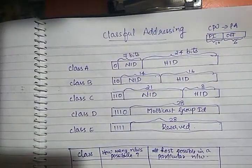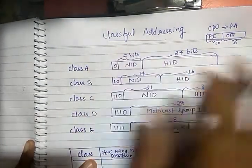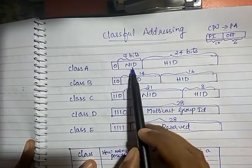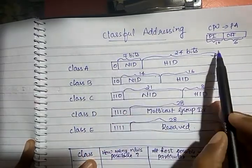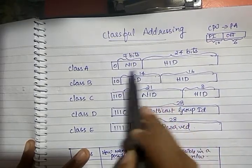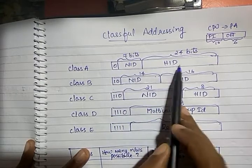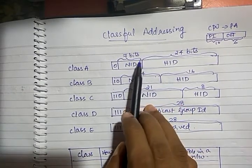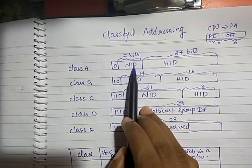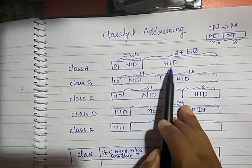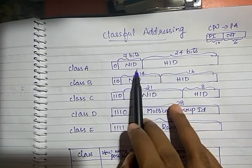The next concept is how the addresses are managed. It is a kind of hierarchical address. That means if you have a 32-bit address, that 32-bit address is divided into two parts — a Network ID (NID) and a Host ID. The Network ID helps you to identify a particular network where your machine with this particular IP belongs. The Host ID identifies a particular machine within the network.